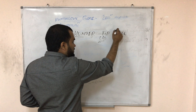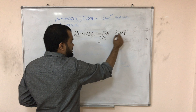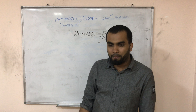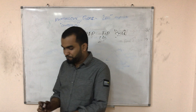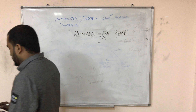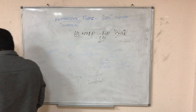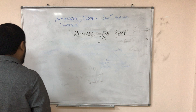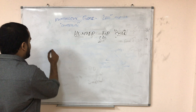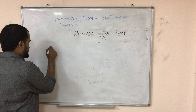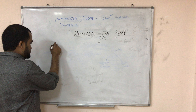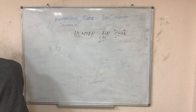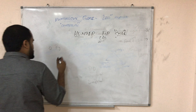For Huntington's disease: the affected chromosome is 4, the repeating codon is CAG, and the protein deficiency is chaperone. Next we study pigment deposition.